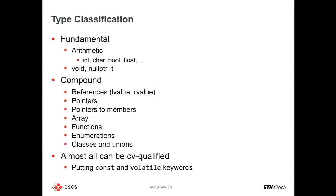There are also compound types, made of other things like references. A reference is a compound type because it's a type plus the ampersand symbol. We have L-value and R-value references in C++. Pointers are a compound type, as are pointers to members — pointer to data members and pointer to function members — plus arrays, functions, enumerations, classes, and unions.